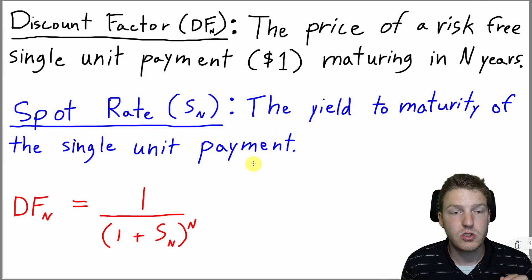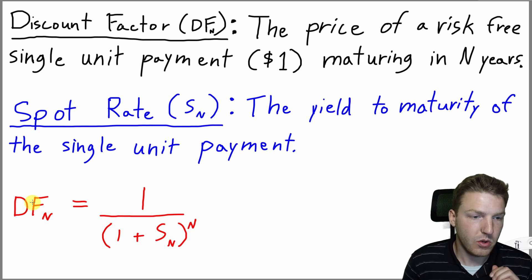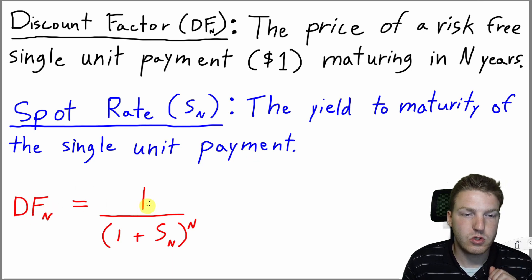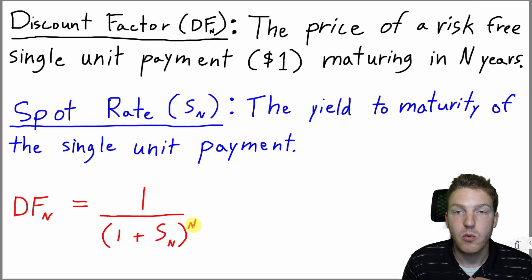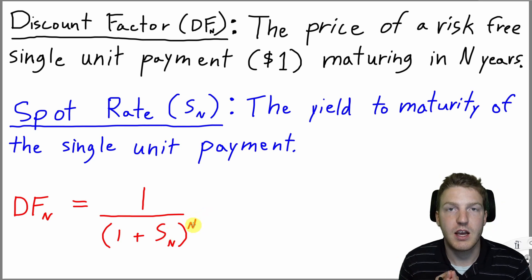And we can put these together into a single formula. So the discount factor is equal to 1, so that would be the $1 payment that we talked about here, divided by 1 plus the spot rate to the power of however many years this contract is.